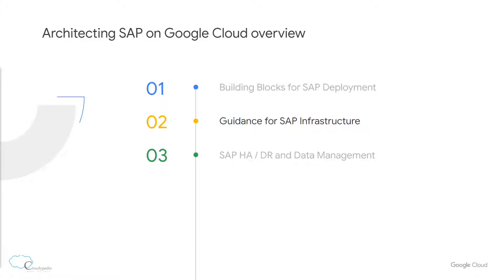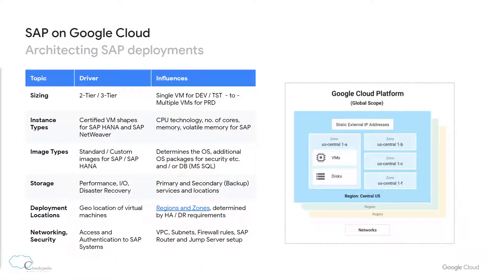Now let's see how SAP deployments can be architected on Google Cloud. Architecting SAP deployments has different topics and aspects to decide the requirements of the system in GCP. For example, the sizing — whether the SAP architecture is a two-tier or three-tier determines the number of VMs. The instance types, where the certified VM shapes for SAP HANA and SAP NetWeaver, decide the specs of the VM like the CPU technology, number of cores, and memory.